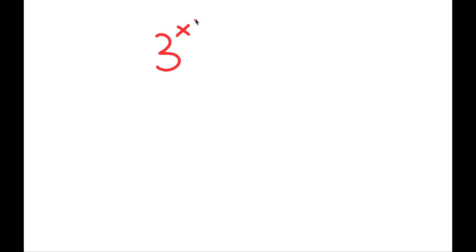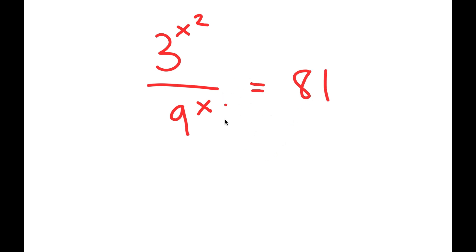Alright, so for this video I'm going to solve the equation 3 to the power of x squared over 9 to the power of x is equal to 81. So to solve this, I want all my terms in the same base. And in this case, this would be a base of 3 because all of these are powers of 3.